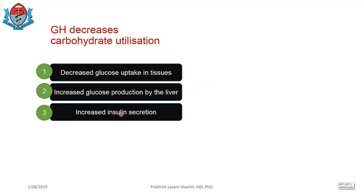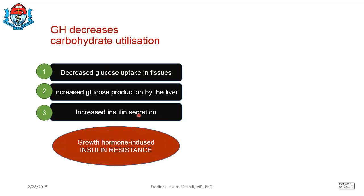So you end up with high levels of insulin, but because you have high levels of growth hormone, glucose cannot be taken into the cells. At the end of the day, you have high levels of insulin but high levels of glucose in the blood. This state is known as growth hormone-induced insulin resistance — because you have high insulin levels but glucose is not being taken into the cell.